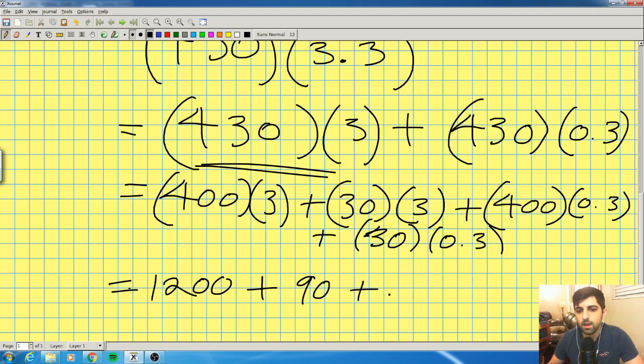And how do I get 400 times 0.3? Well, I know how to multiply by 0.1, right? So 400 times 0.1 is 40. I just moved the decimal over once to the left, 40. How do I get 400 times 0.3? Multiply 40 by 3 because 0.3 is 0.1 times 3. So you end up getting 40 times 3, which is 120, okay?